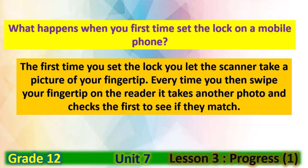Now, the answer to the starter question — what happens when you first set the lock on a mobile phone? The first time you set the lock, you let the scanner take a picture of your fingertip. Every time you then swipe your finger on the reader, it takes another photo and checks the first to see if they match. If they match, you're in.